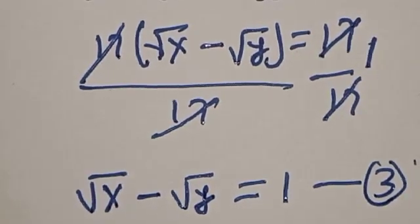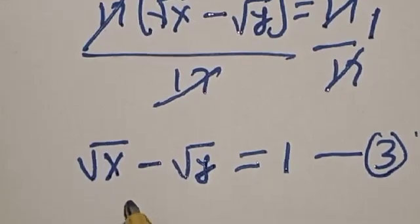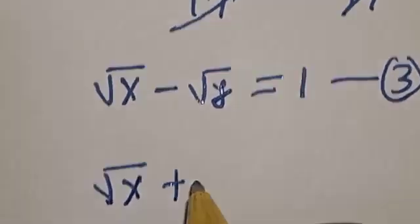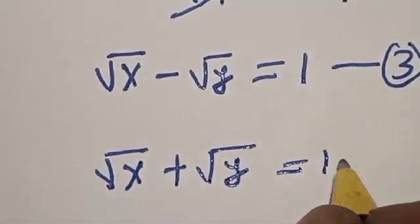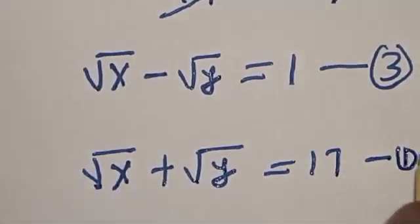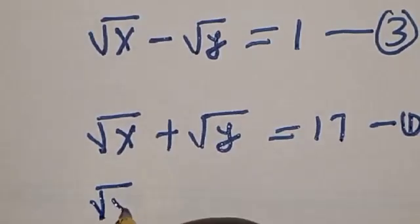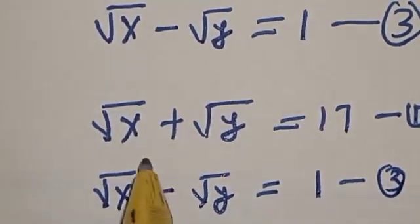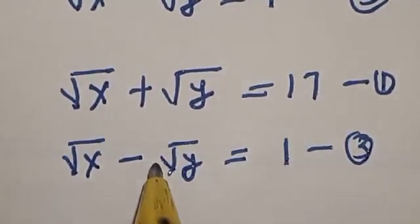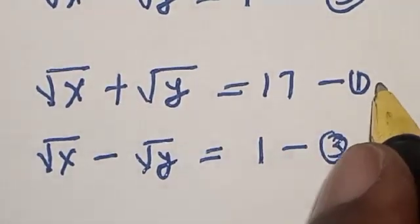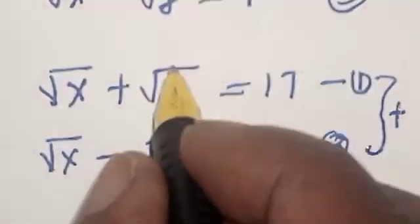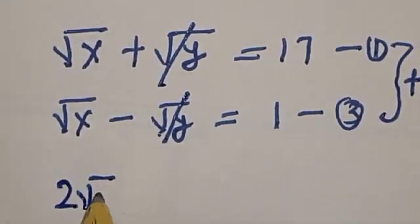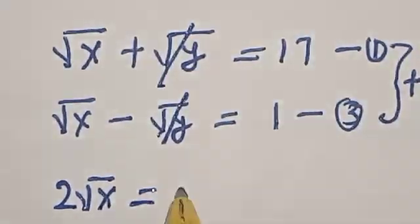We can see that equation 1 and equation 3 can be solved simultaneously. Equation 1 is square root of x plus square root of y equals 17, and equation 3 is square root of x minus square root of y equals 1. Let's add equation 1 and 3 together. The square root of y terms cancel, giving us 2 times root of x equals 17 plus 1, which is 18.